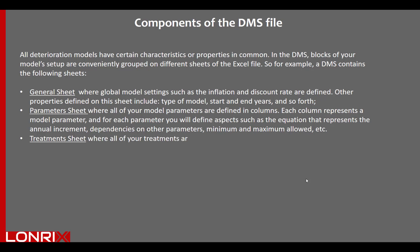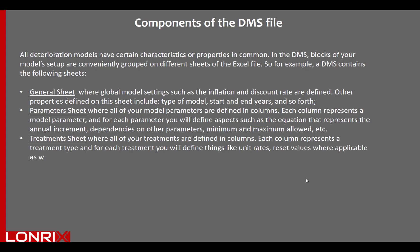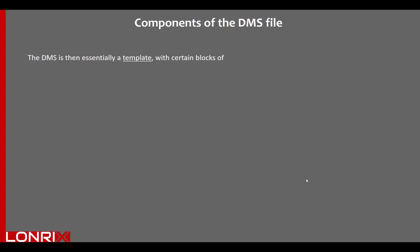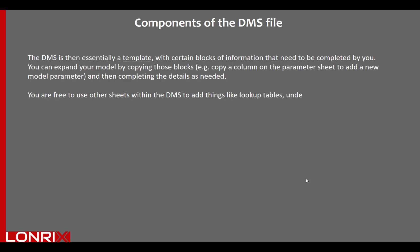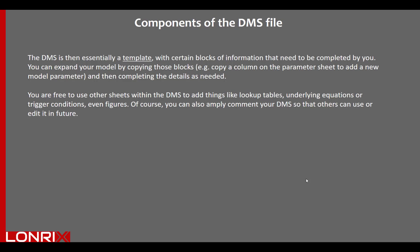There is also a treatment sheet where all of your treatments are defined in columns. Each column represents a treatment type, and for each treatment you will define things like unit rates, reset values where applicable, as well as the very important trigger condition equations. The DMS file is essentially a template with certain blocks of information to be completed by you. You can expand your model by copying columns on the parameter sheet to add a new model parameter. You are also free to use other sheets to add lookup tables, underlying equations, or even figures, and you can amply comment your DMS so that others can use or edit it in future.